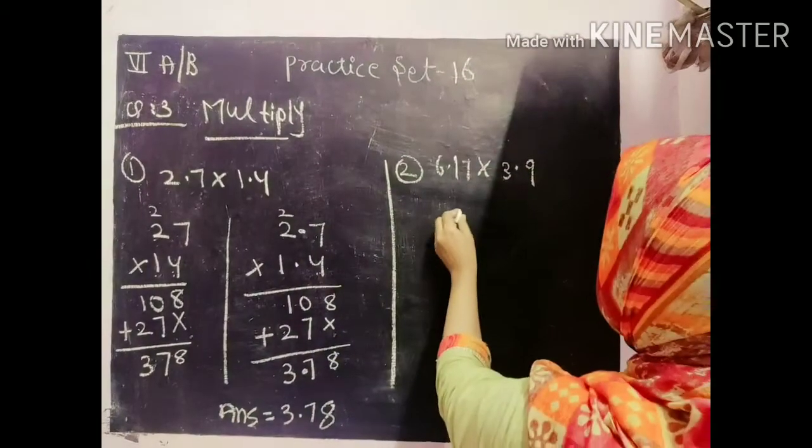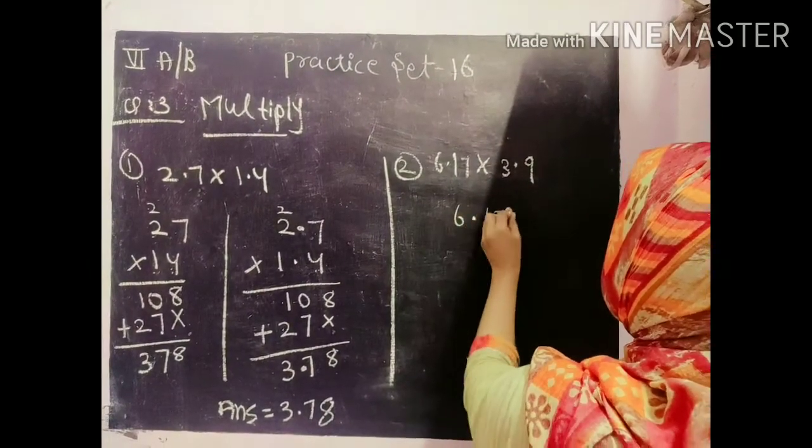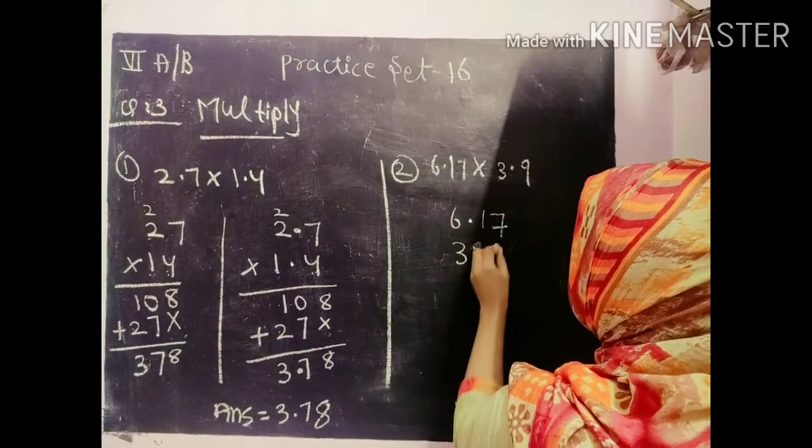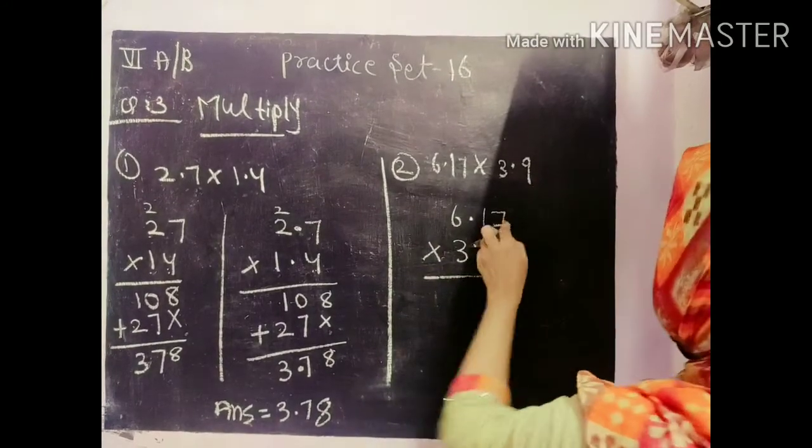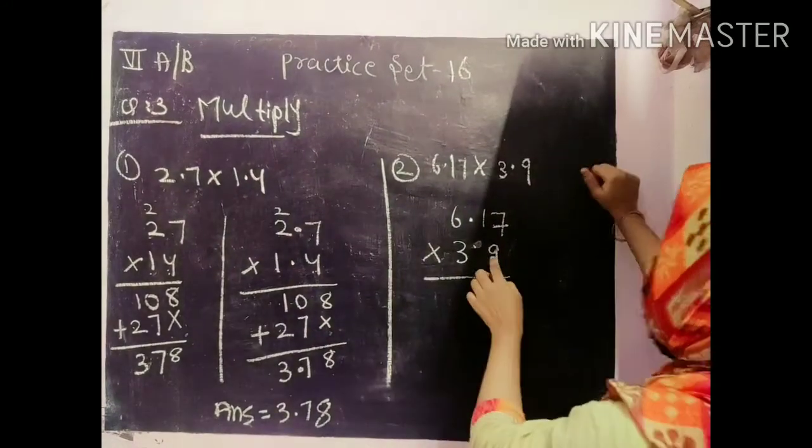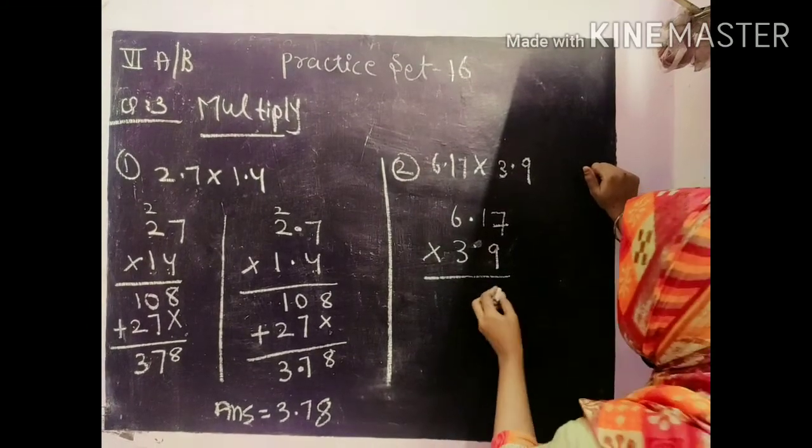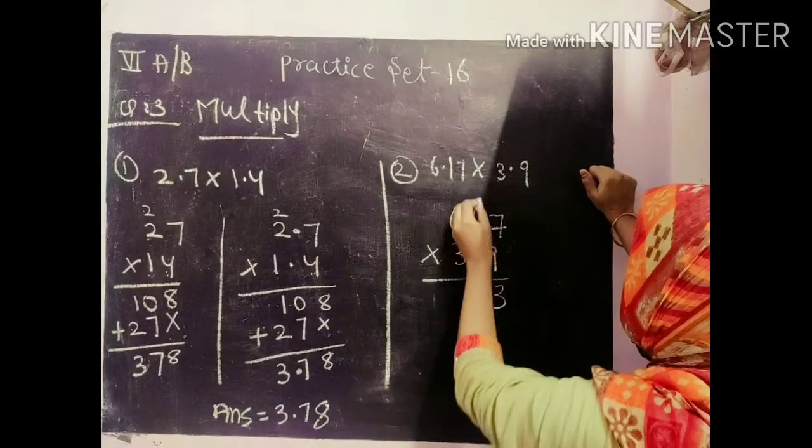Now come to question number 2, 6.17 and 3.9. So here 7, 9, 7's are 63. 3 will come here. And 6 will carry.